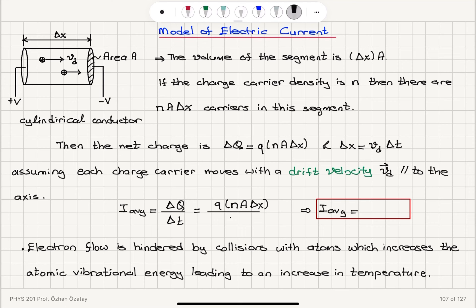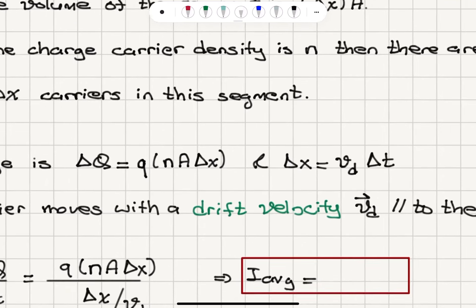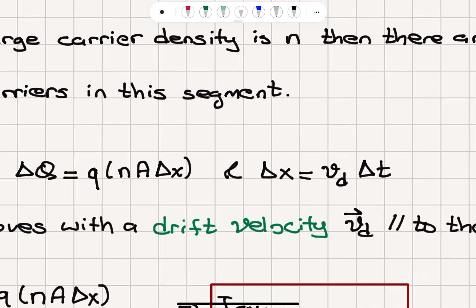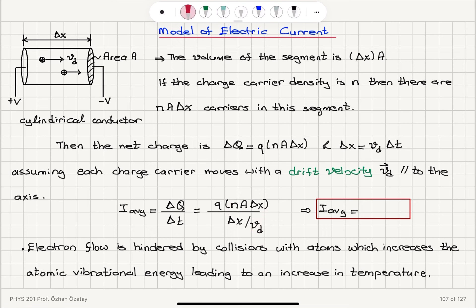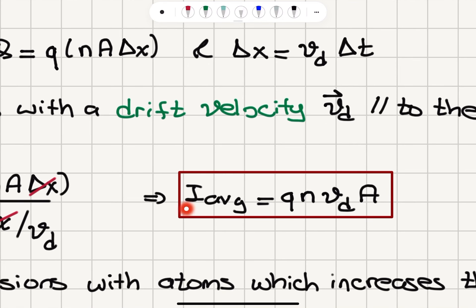So delta t is delta x divided by Vdrift, and that's what I substitute here. You can see that the delta x's will cancel, and I will be left with the average current equal to the charge of each carrier Q, charge carrier density N, drift velocity Vd, multiplied with the cross-sectional area A. So the average current that flows through this conductor is Q — charge of each charge carrier — N — the number of charges per volume — Vdrift, the average velocity of these charge carriers, multiplied with area A.